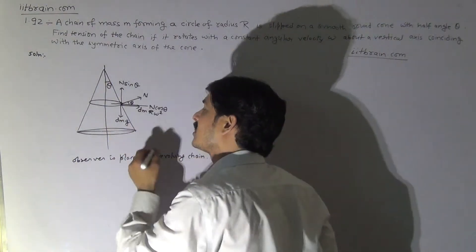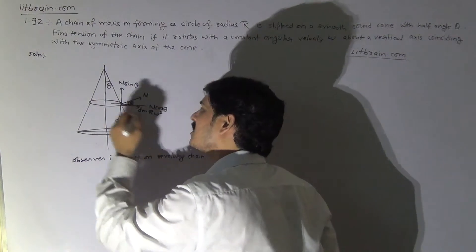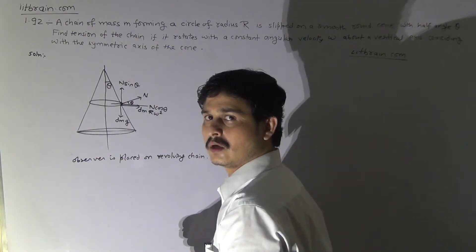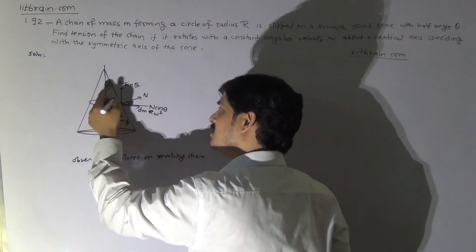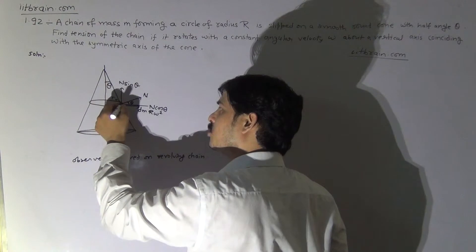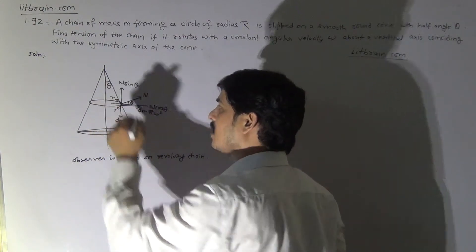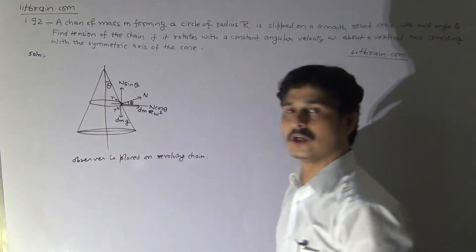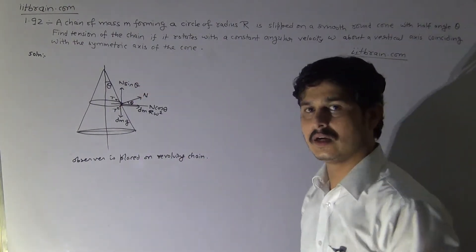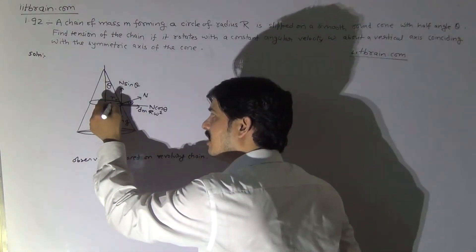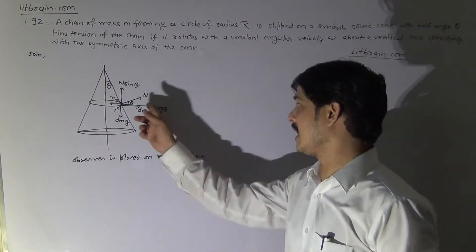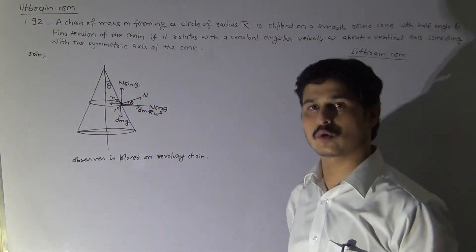The tension of this chain is the force exerted by any particle on the adjacent particle. Each particle in the circle exerts tension, and in this diagram the forces to balance are N cosθ and dm·R·ω².